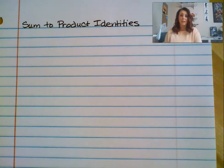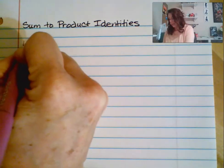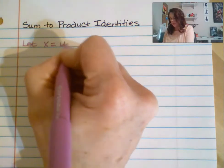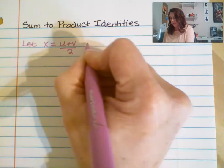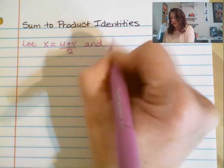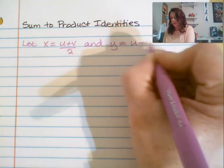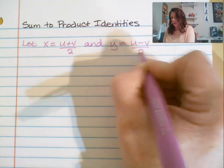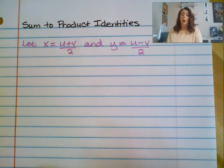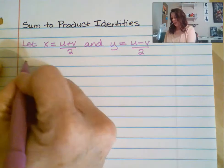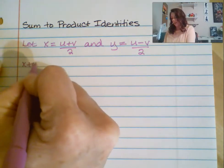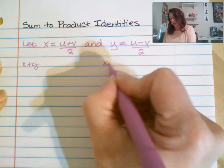First, we need to identify some variables and let them have specific values. We are going to let x be represented by the quantity u plus v, all divided by 2. And we're going to identify y as u minus v, all divided by 2. Alongside those associations, we will also need the values of x plus y and x minus y.